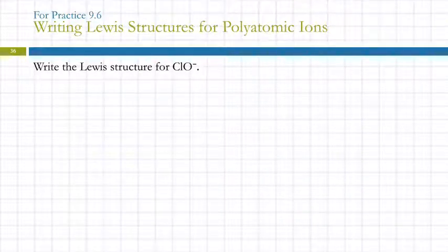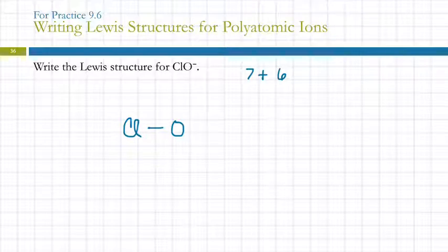What about polyatomic ions? We have to consider the charges. So we're going to start out the same. Make a skeleton. So here we have two elements. They must be bonded to each other. Chlorine and oxygen. If you put the oxygen on the left, it's fine. Then we have to count up the number of electrons. How many valence electrons does chlorine have? Seven. And oxygen has? Six. What do we do with that negative charge?